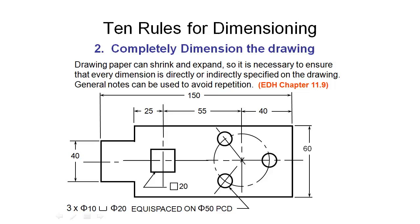Rule number two is that we need to completely dimension the drawing. It's not enough to draw everything nicely to scale, put a few of the functional dimensions on, then expect the person manufacturing the part to figure out the rest or measure things off the drawing.